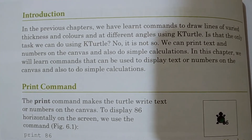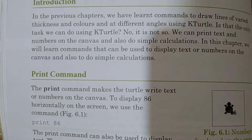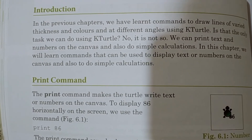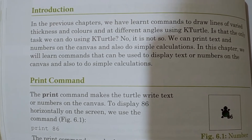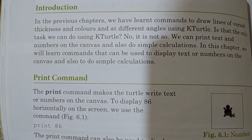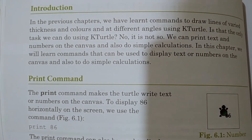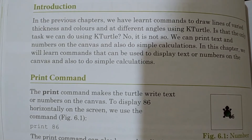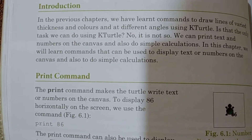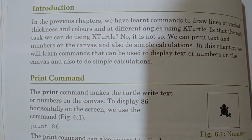In the previous chapter, we learned commands to draw lines in varied thickness and color and at different angles using K-Turtle. But is that the only task we can do using K-Turtle? No, it is not. We can also print text and numbers on the canvas and do simple calculations.